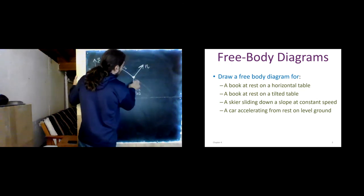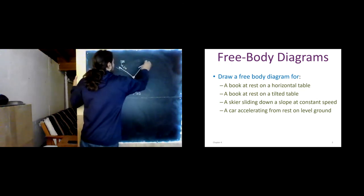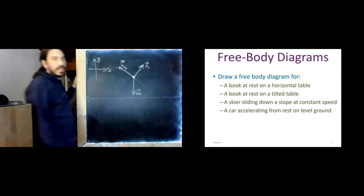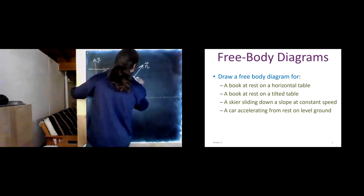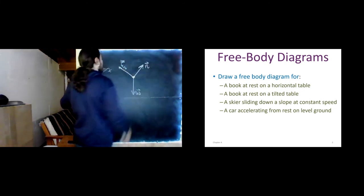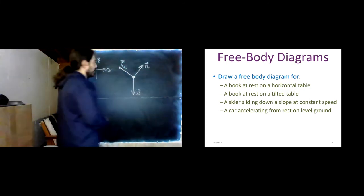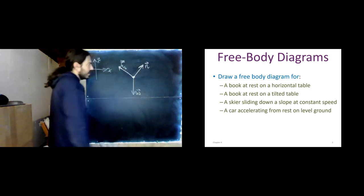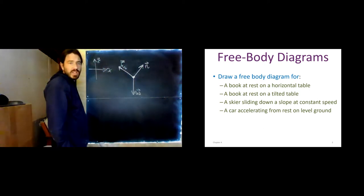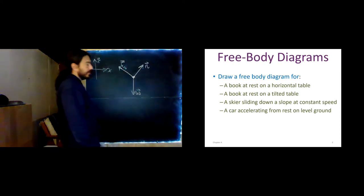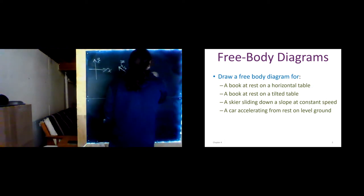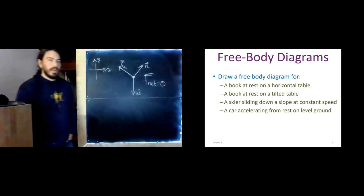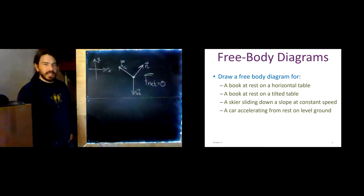There we go. We can get rid of our hill now to avoid confusion. Make sure everybody has vector symbols so that they look nice and adorable. And that's a pretty nice free body diagram. I think in this case, we do know what Fnet is. What is it? Zero. Boom! A book at rest on a tilted table.